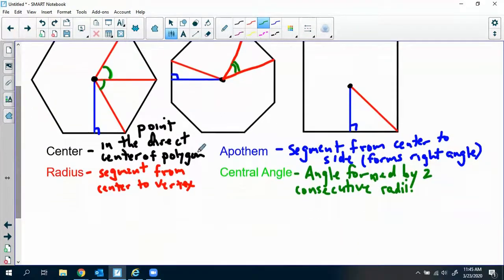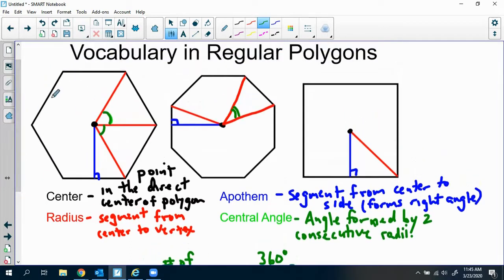Now we can calculate the central angle by doing 360 degrees divided by n, where n represents the number of sides. So the central angle in a hexagon would be 360 divided by 6.